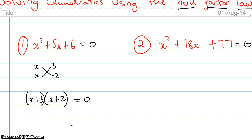Okay what I'm really after is an x value that will make this equation true. So if x is 1, I'll get 1 plus 3 which is 4 times 1 plus 2 which is 3, so 4 times 3 which does not equal 0.